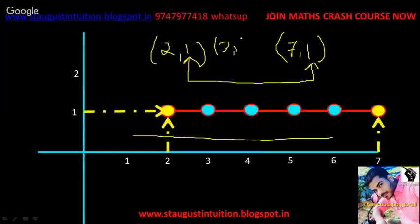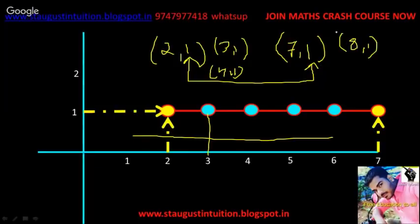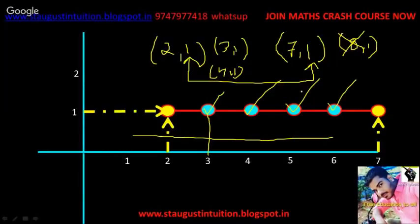So the line through A(2,1) and B(7,1) is parallel to the X-axis. Other points on this line are (3,1), (4,1), (5,1), (6,1), and (7,1). You can choose any of these as another point on the line.